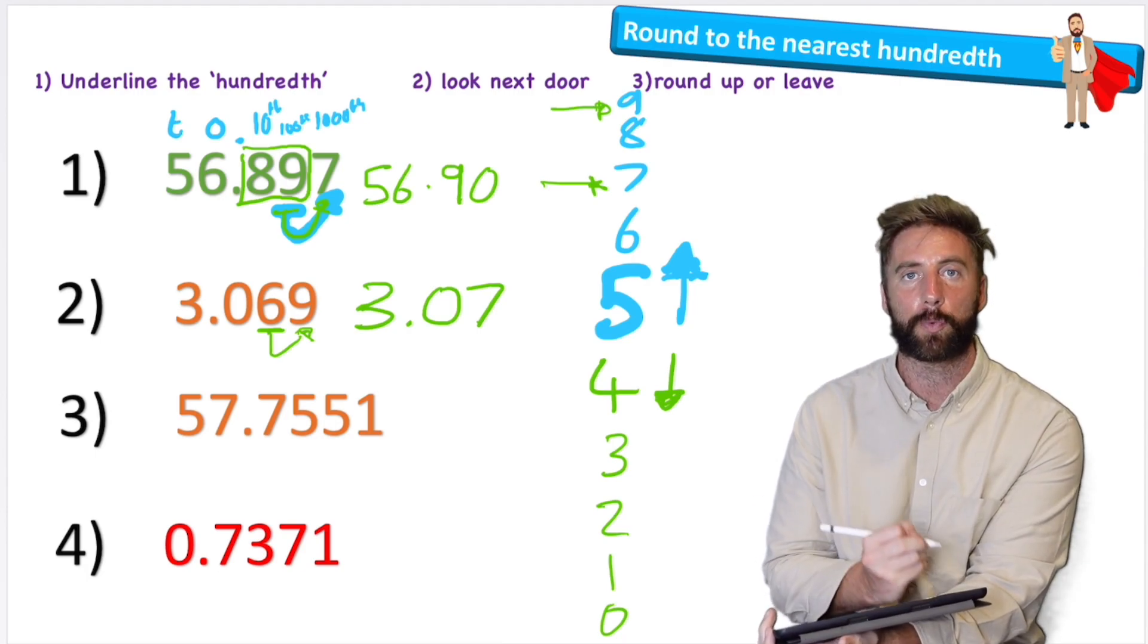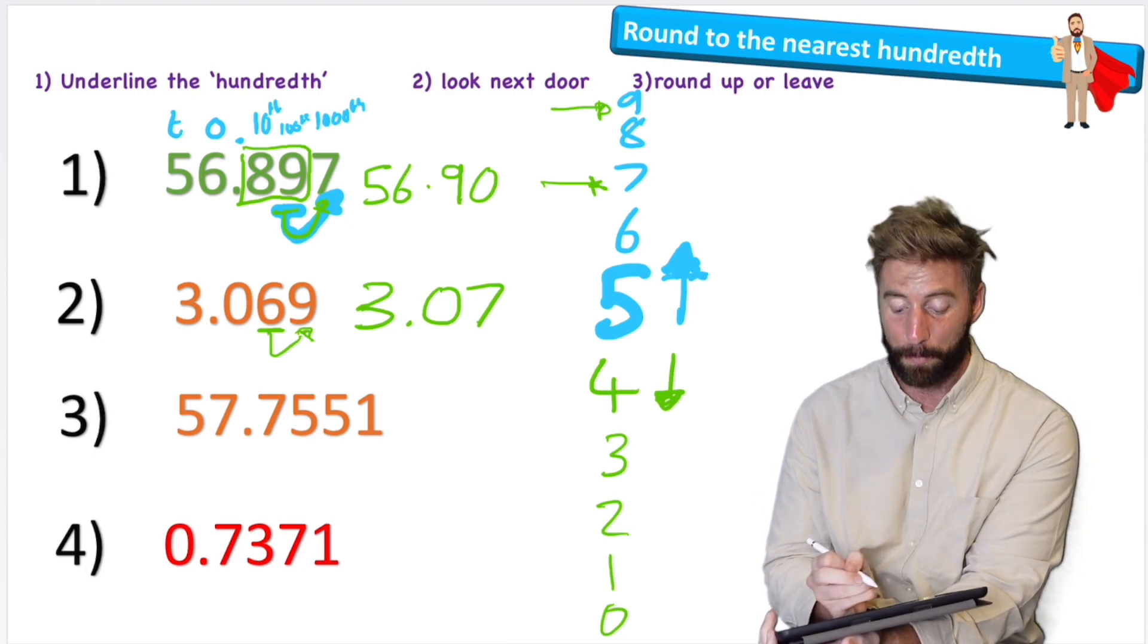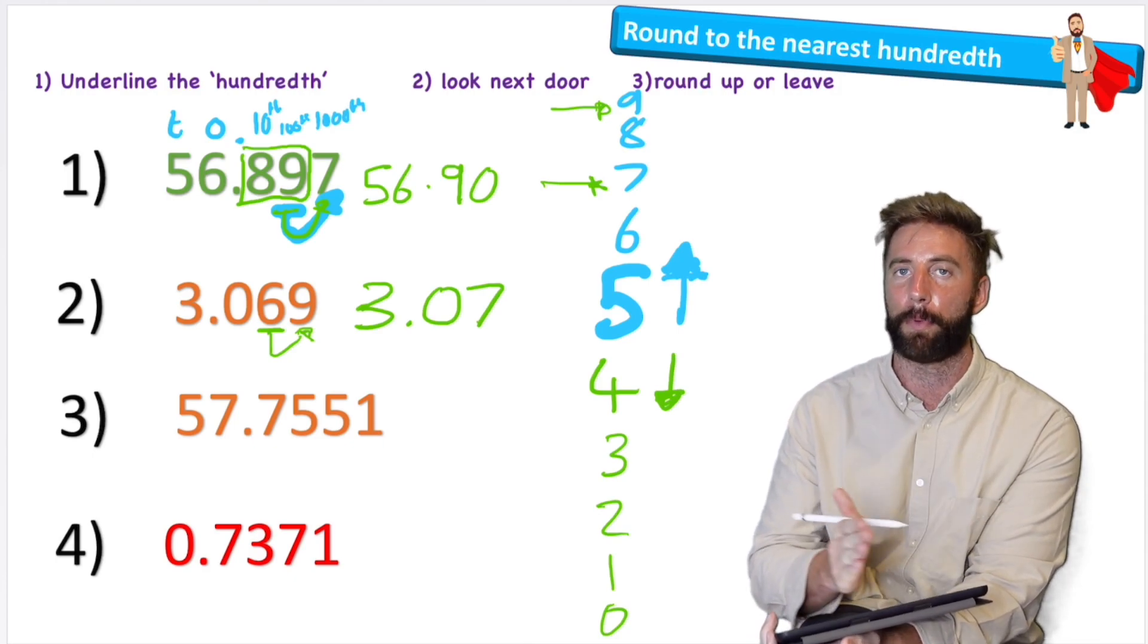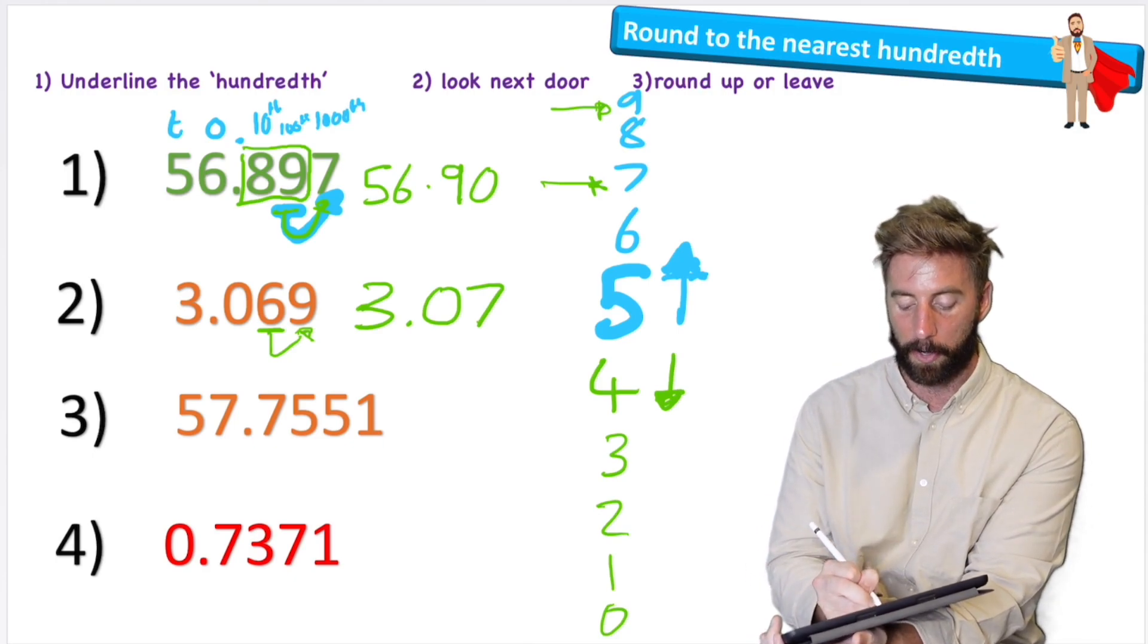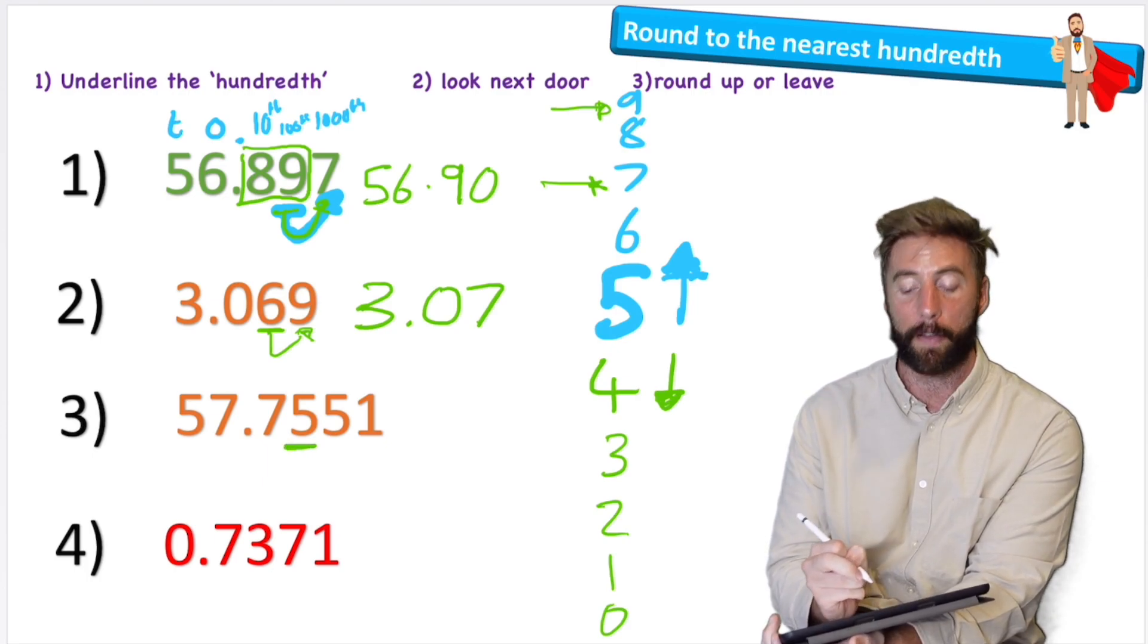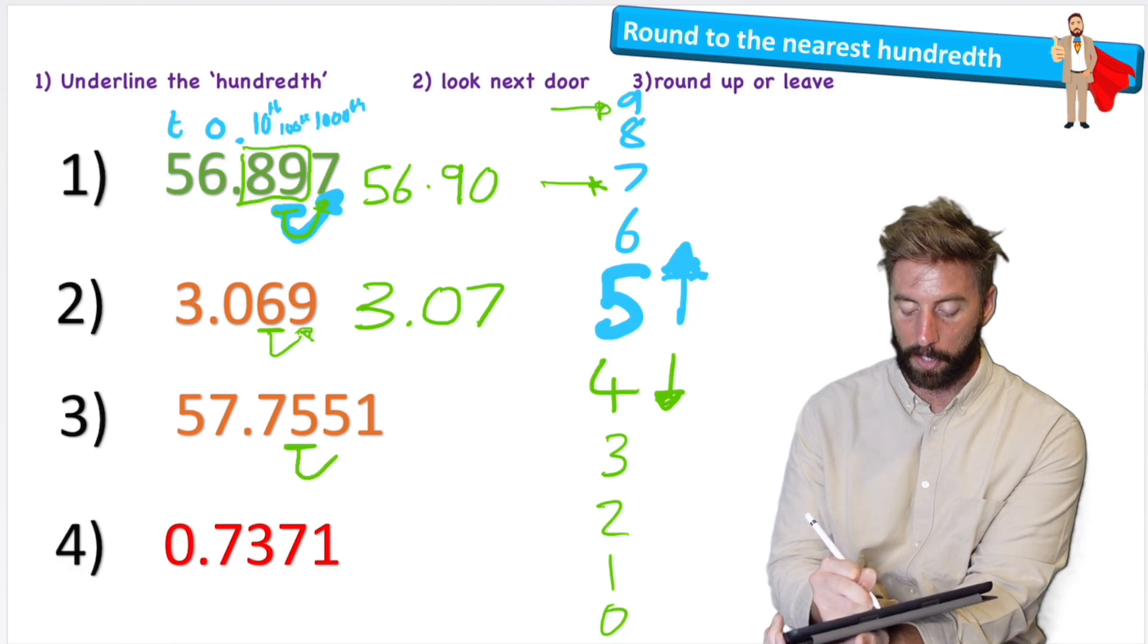Okay, question three looks a lot harder because we've got loads more digits, but actually it's super simple because all we care about is the number that's in the hundredths column and the number that's next door. So first let's find our hundredths column. Two digits after the decimal and it's a five this time. I look next door and I can see that we have a five again.